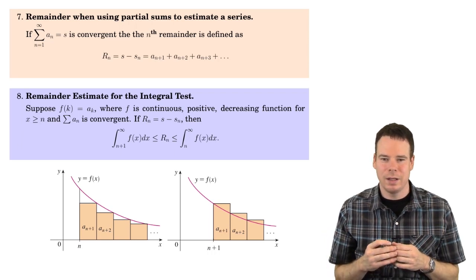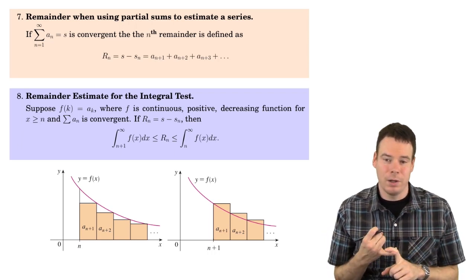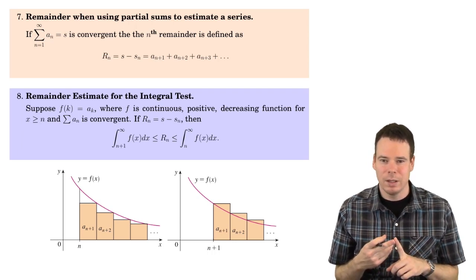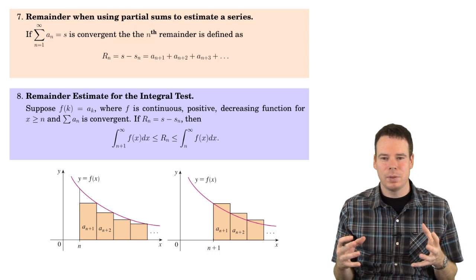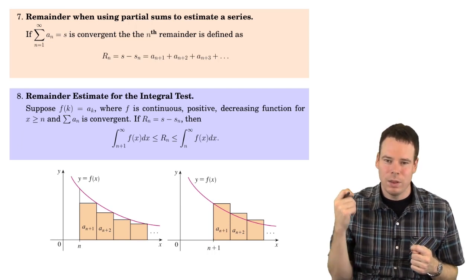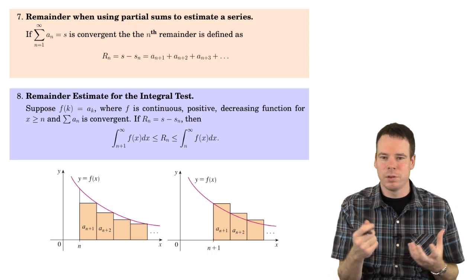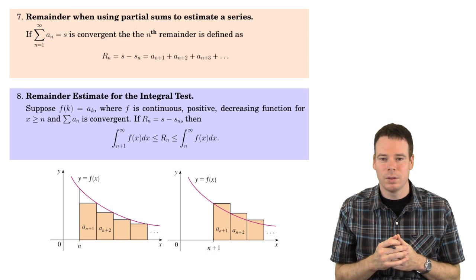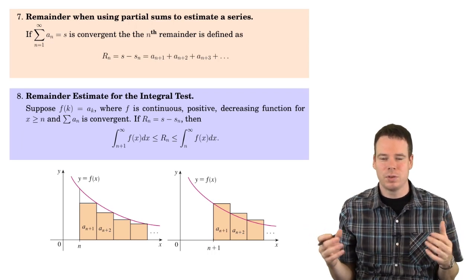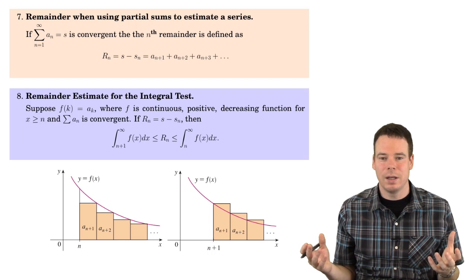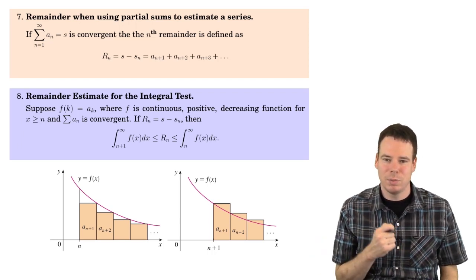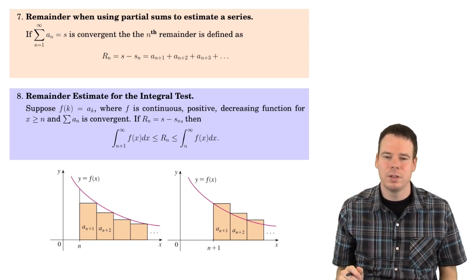The question is then, how many terms do you need to add up? Do I add up a hundred terms, a thousand terms, a million terms? How many terms do I need to add up so that I get within a certain tolerance of the actual value of the sum — which I don't know? It all depends on the particular series and how fast the terms go to zero.